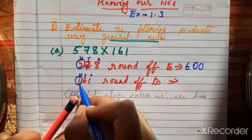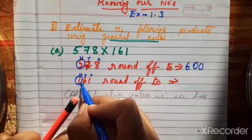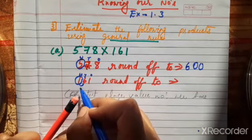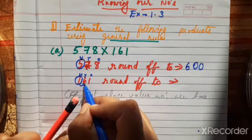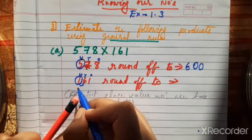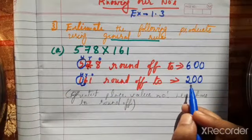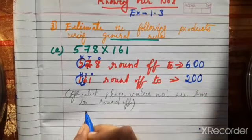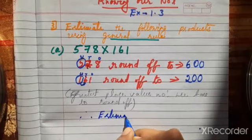Now round off 161. The hundreds place digit is 1 — circle it. Knock the door: the next digit is 6. Ask: do you have 5 rupees or more? Yes, 6 is greater than 5, so it can help. Add 1 to 1, making it 2. The remaining digits become zero. So 161 rounds off to 200.